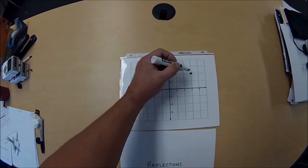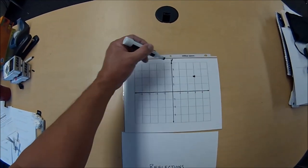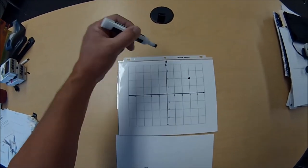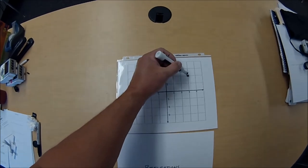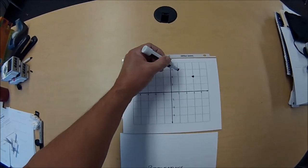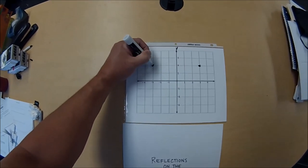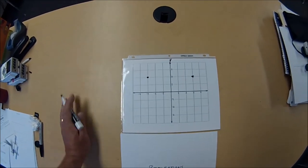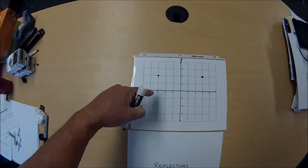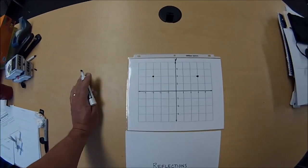So to reflect point (3,2) over this y-axis or the net, if they were to hit the ball to the same person on the other team on the same exact spot, the reflection would be (-3, 2).